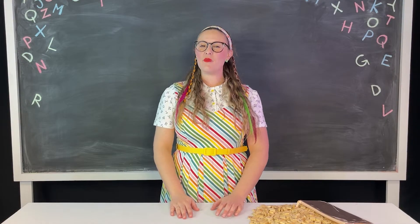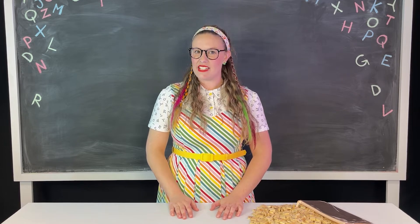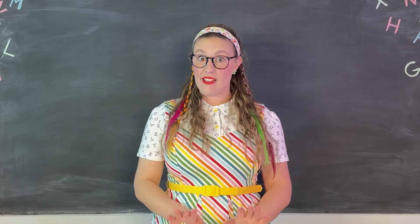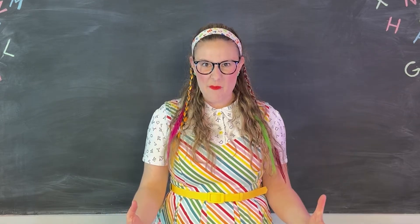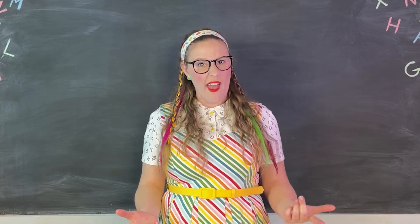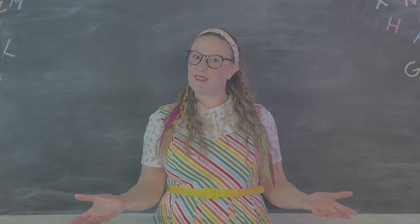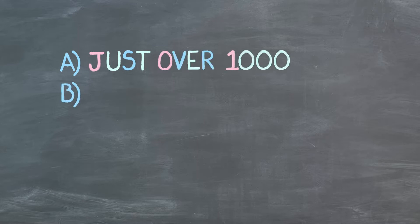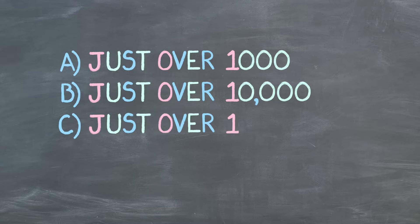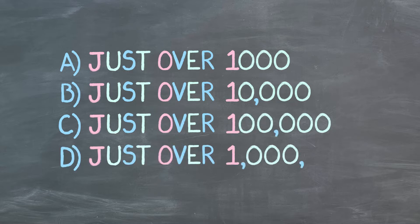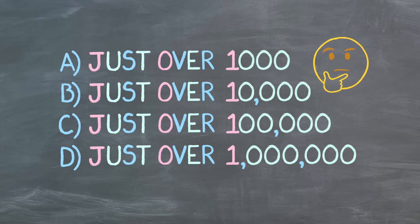How many words do you think might currently exist in the English language? That is, how many words in total — whether they be regular words or rare or archaic or obsolete. Would that be A: just over 1,000, B: just over 10,000, C: just over 100,000, or D: just over 1 million? What do you reckon?